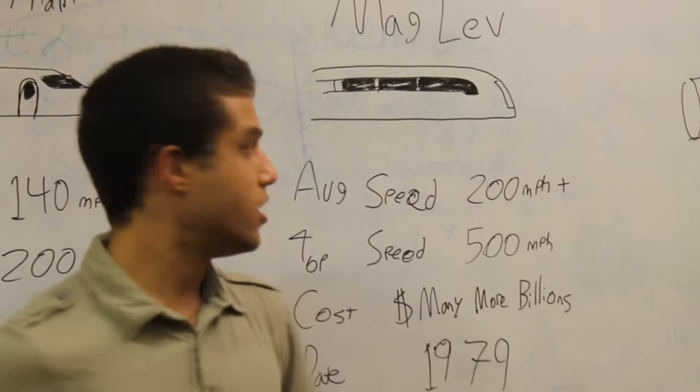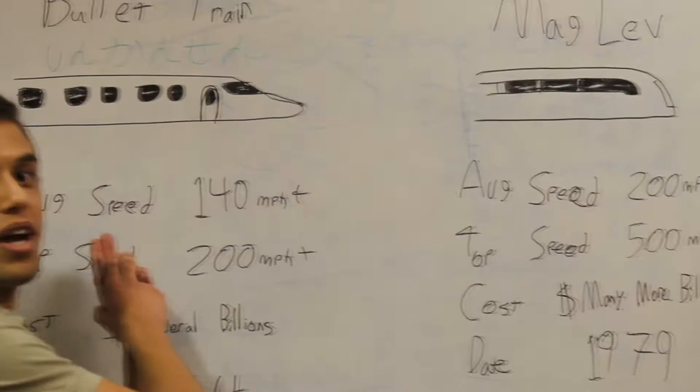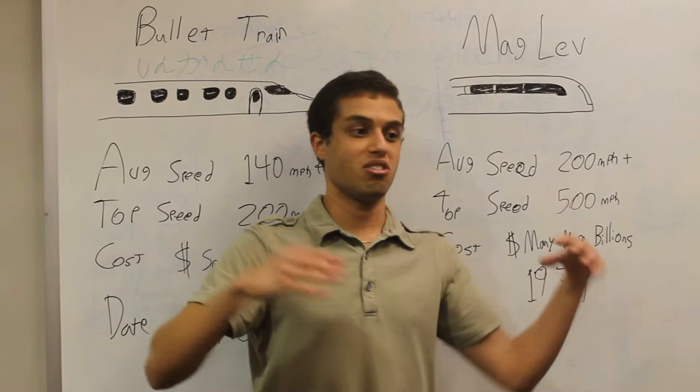Now we go on to the second type, which is the Maglev. The Maglev was introduced in Germany in 1979. These go a lot faster than their electric counterparts. While the electric bullet train runs on rail, the Maglev system actually runs pretty much on thin air. I'm not joking.